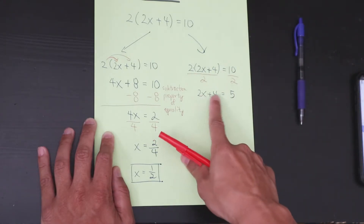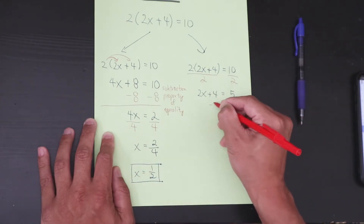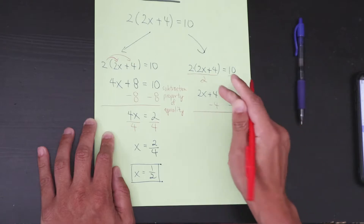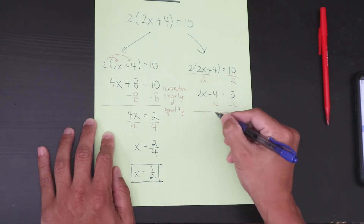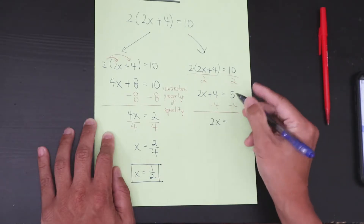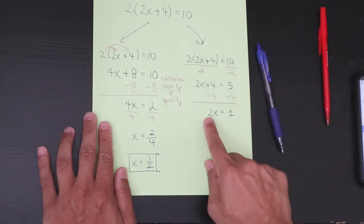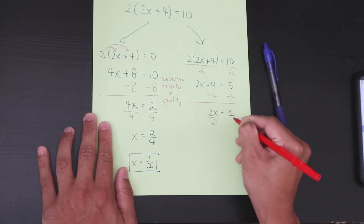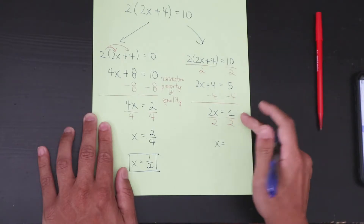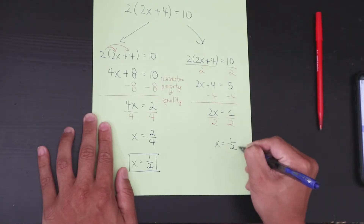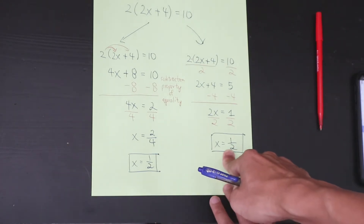Different steps from method one but the same process. You subtract 4 on both sides — positive 4 and negative 4 cancel — leaving 2x on the left. 5 minus 4 is 1. Then you divide both sides by 2. Since 2 can't go into 1 evenly, you write x equals 1 half. Both ways give the same answer.